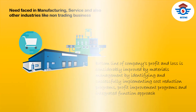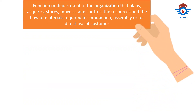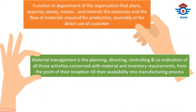Now we will see the definitions of materials management. Materials management is defined by many authors in different ways. Simply put, materials management is the function or department of an organization that plans, acquires, stores, moves, and controls the flow of materials required for production, assembly, or direct use by the customer. Another definition: it is the planning, directing, controlling, and coordination of all activities concerned with material and inventory requirements from their inception until their availability in the manufacturing process.